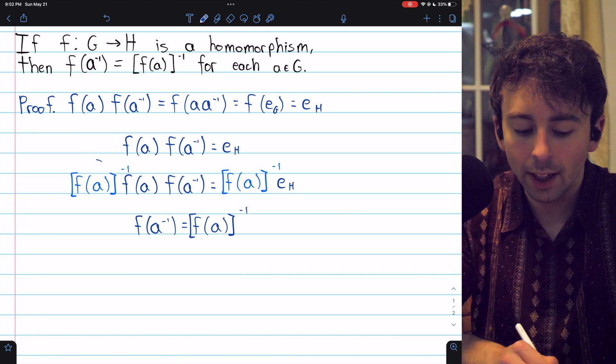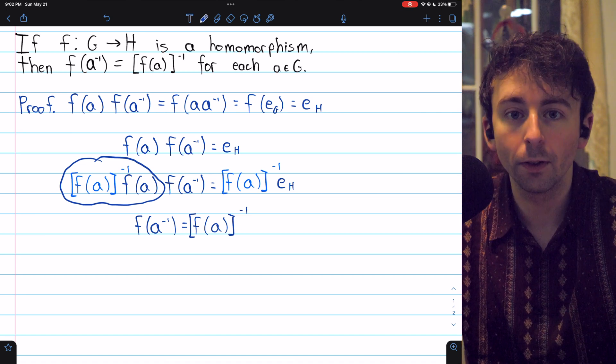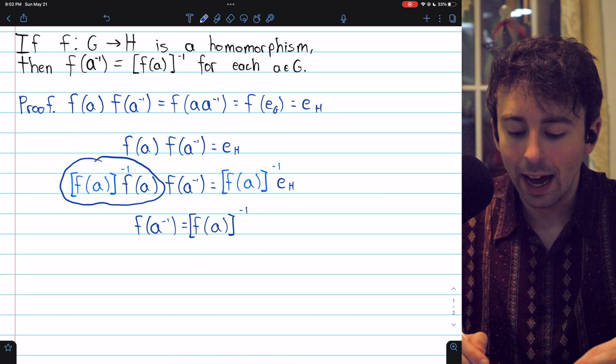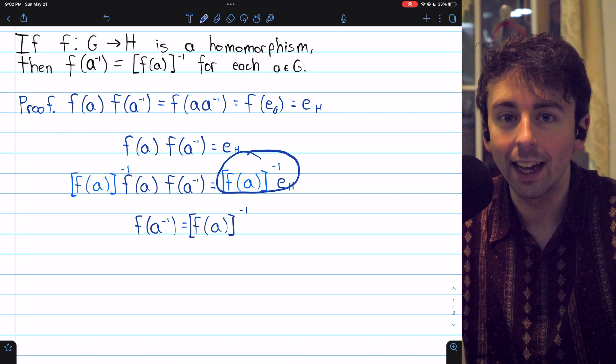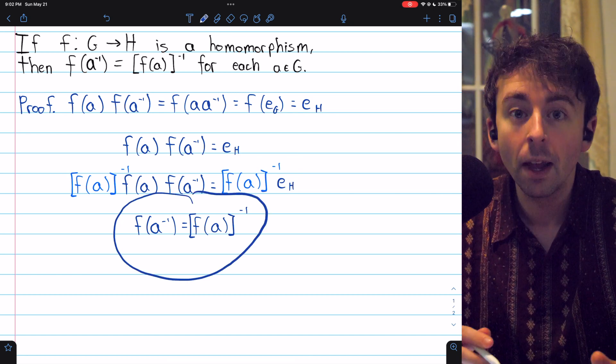Again, in the last step, on the left, we had the inverse of f(a) times f(a), which just disappears because that's the identity. And then we had on the right, the inverse of f(a) times the identity of H. The identity of H we don't need to write, and so we just get here. Thus, we've proven that group homomorphisms map inverses to inverses.